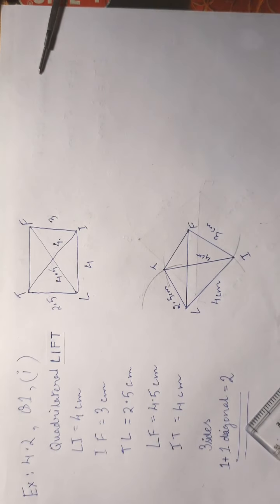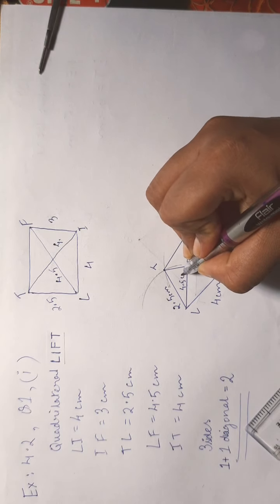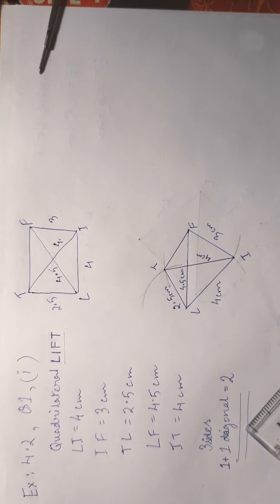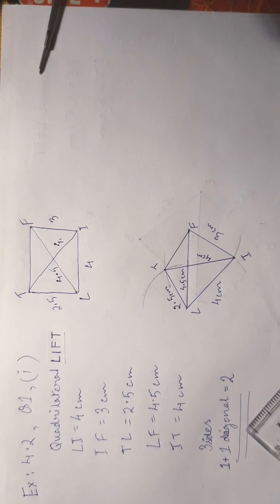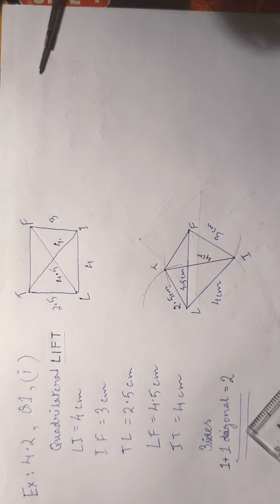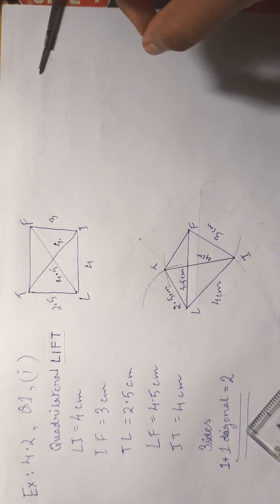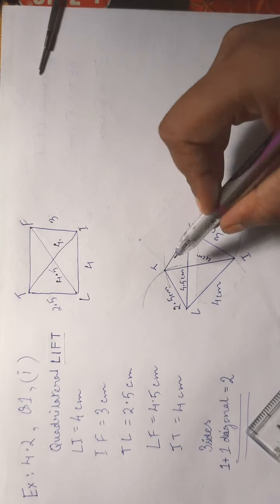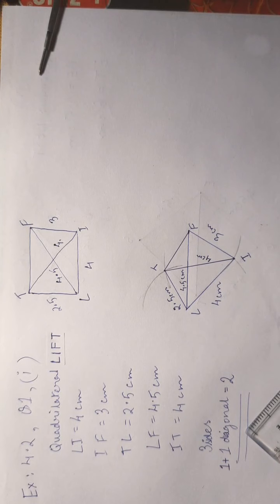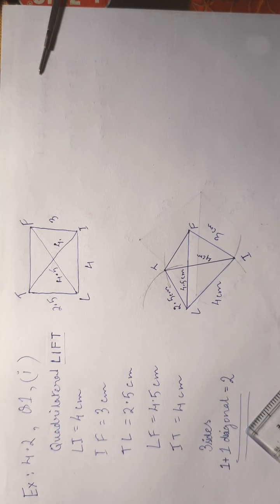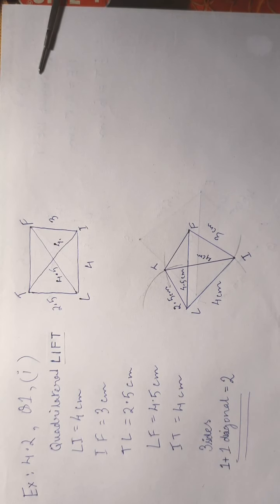We also join diagonal IT, which is 4 centimeters, and diagonal LF is 4.5 centimeters. This is the required quadrilateral LIFT, constructed using a scale and compass. Three sides and two diagonals were given. Remember to draw all lines, diagonals, and arcs with a pencil.